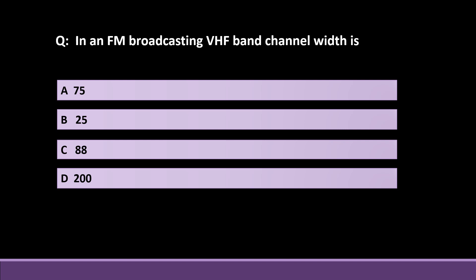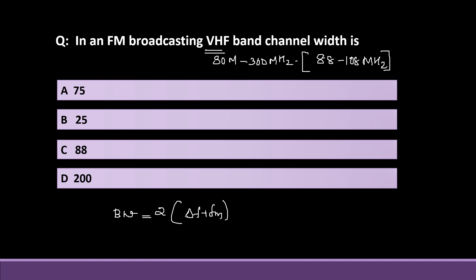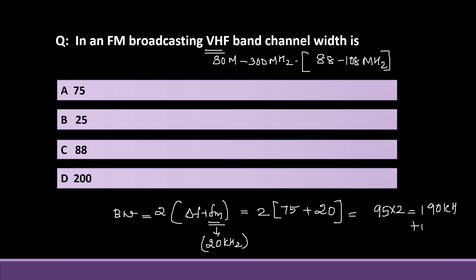FM broadcasting uses VHF up to 300 MHz, with the FM band from 88 to 108 MHz. The bandwidth formula is 2 × (delta F + FM). The frequency deviation of FM is 75 KHz, and the maximum audible frequency is 20 KHz. So: 2 × (75 + 20) = 2 × 95 = 190 KHz, plus a guard band of 10 KHz gives 200 KHz. The right answer is Option D — 200 KHz.